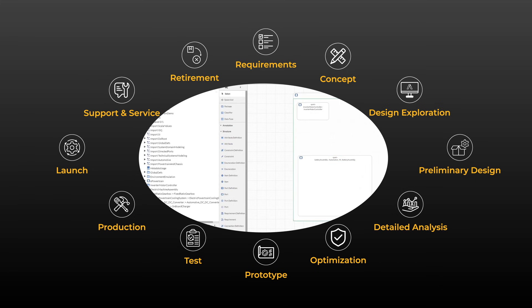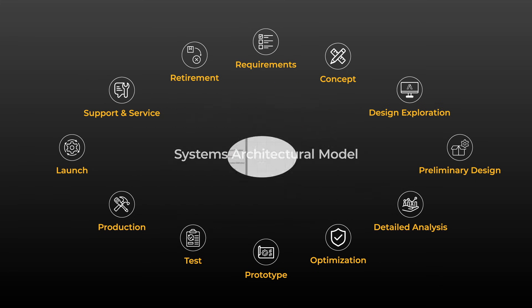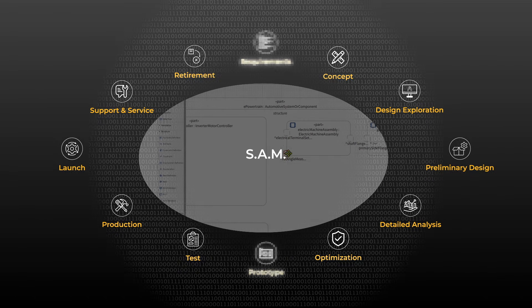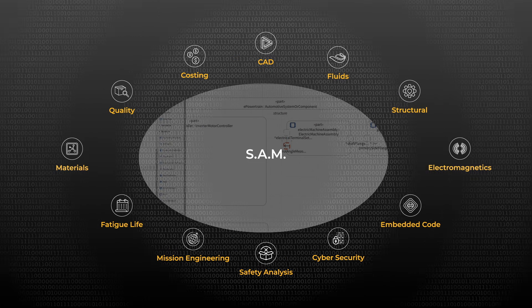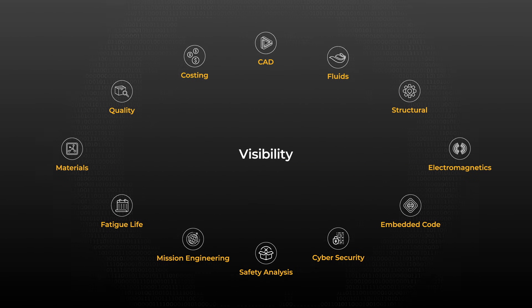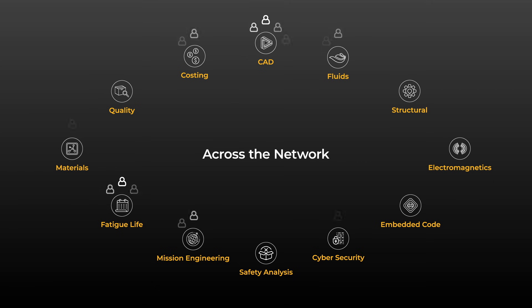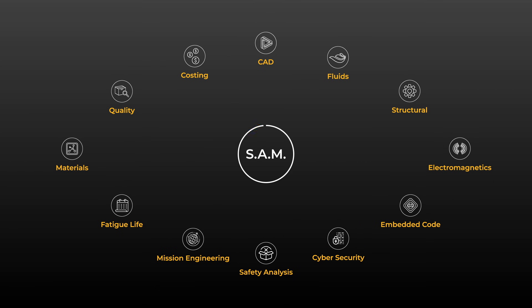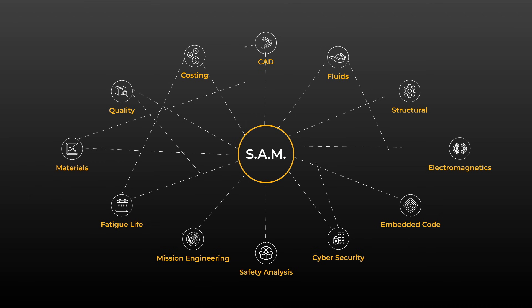Model-based engineering starts with a SAM, or Systems Architectural Model. This descriptive representation of your product acts as a single authoritative source of truth, as your design evolves over time. MBSE connects the SAM via digital thread to your systems simulation and analysis toolchain, providing real-time access and visibility to all the engineers and departments responsible for design integrity. Changes made to the SAM are automatically propagated throughout the digital thread.